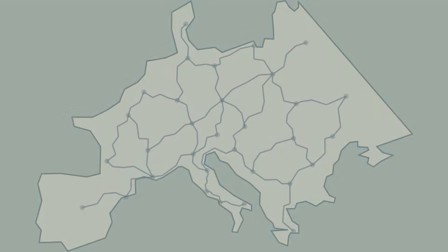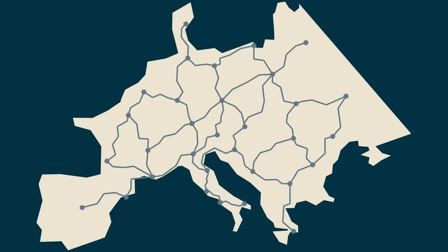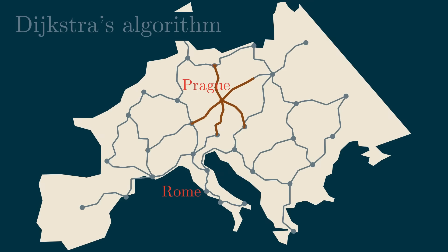If this were your first course in programming, the answer would be that we can represent the road network as a weighted graph and then run Dijkstra's algorithm, a standard shortest path algorithm. It starts in Prague and searches in all directions until it discovers Rome, at which point it finds the shortest path.